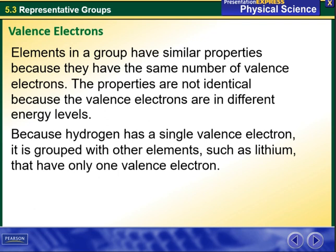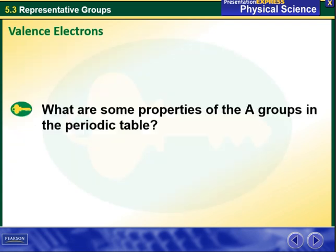Elements in a group have similar properties because they have the same number of valence electrons. The properties are not identical because the valence electrons are in different energy levels. Also, because hydrogen has a single valence electron, it is grouped with other elements such as lithium that have only one valence electron.